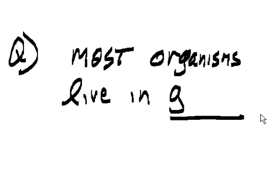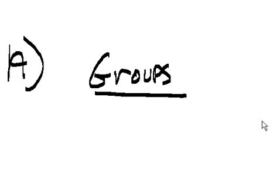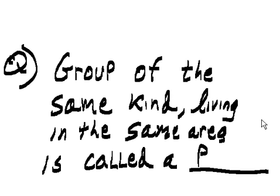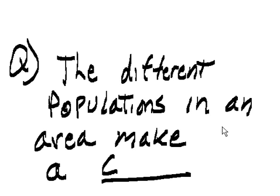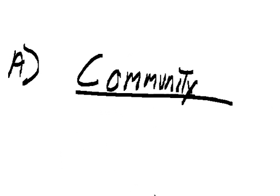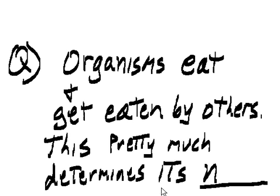Most organisms live in groups. A group of the same kind living in the same area is called a population. The different populations in an area make a community. Organisms eat and get eaten by others, and this pretty much determines its niche.